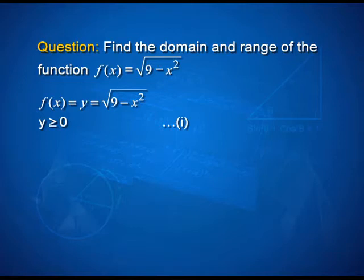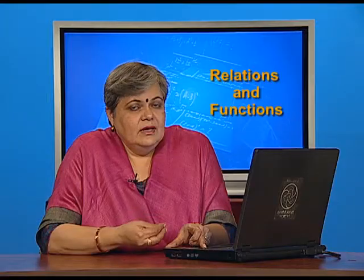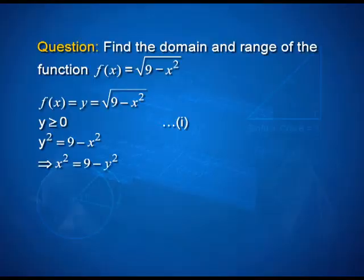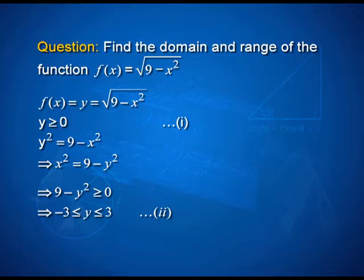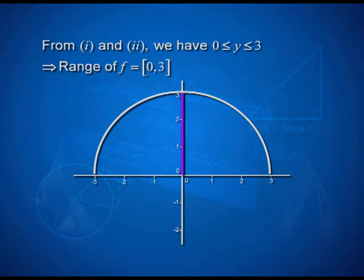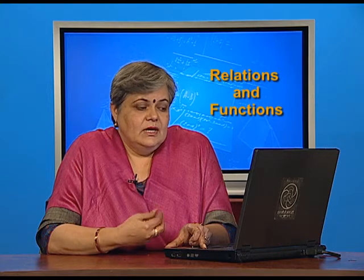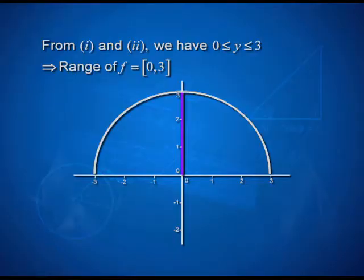At the same time, if I square both sides, I get y² = 9 − x², giving a condition on y through x. So x² = 9 − y². This tells me that 9 minus y squared must be greater than or equal to 0, because x squared is non-negative. Therefore y lies between minus 3 and 3. Combining this with the first condition that y ≥ 0, the intersection gives y lying between 0 and 3, with both 0 and 3 included. Therefore, the range of f is the closed interval [0, 3].